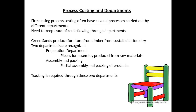Our example uses Green Sands, a small company producing furniture for home assembly from timber obtained from sustainable forests. To carry out costing, the business has identified two departments, which occupy a different space within the same building. The preparation department takes timber as a raw material and cuts the required pieces for home assembly of furniture. The assembly and packing department takes pieces for an item of furniture, adds a pack of screws and glue, then packages the item for sale.